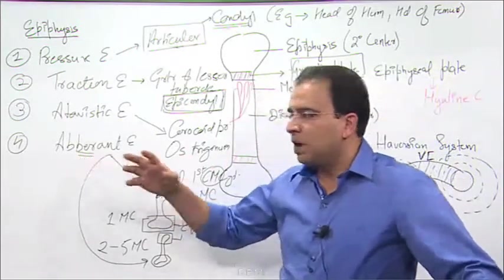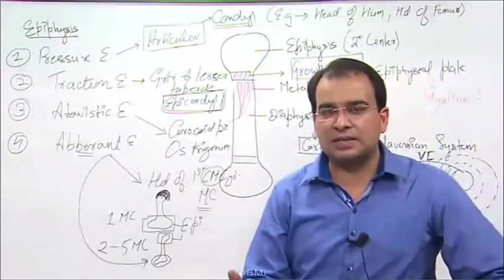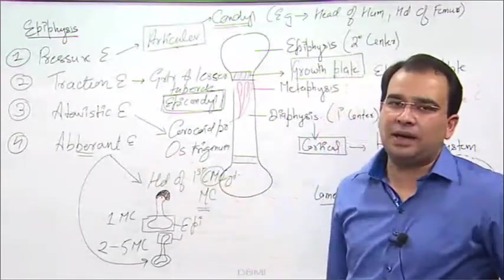Aberrant epiphysis - they do appear aberrantly, usually where you are not expecting epiphysis and you are having it. That is aberrant epiphysis.